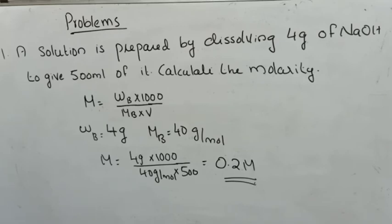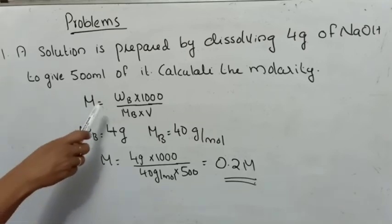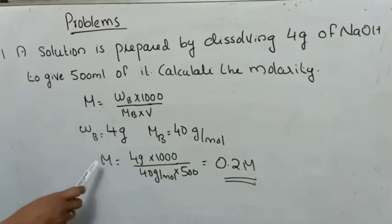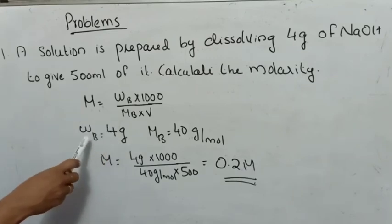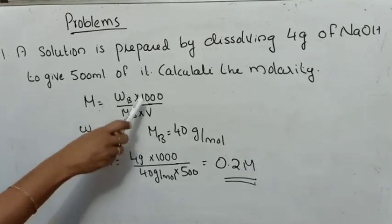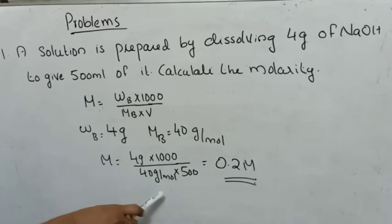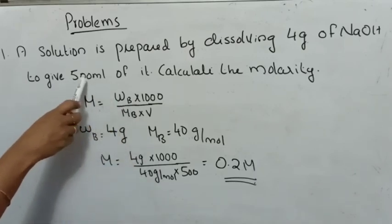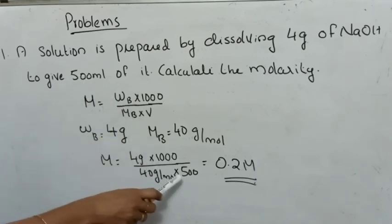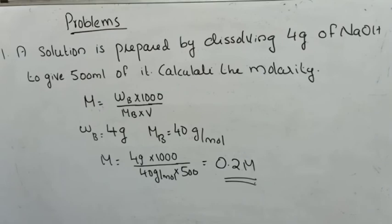MB is 40 g/mol. How? For NaOH: Na = 23, O = 16, H = 1, giving 40 g/mol. Substituting: M = (4 g × 1000) / (40 g/mol × 500 ml). The answer will be 0.2 mol/L.